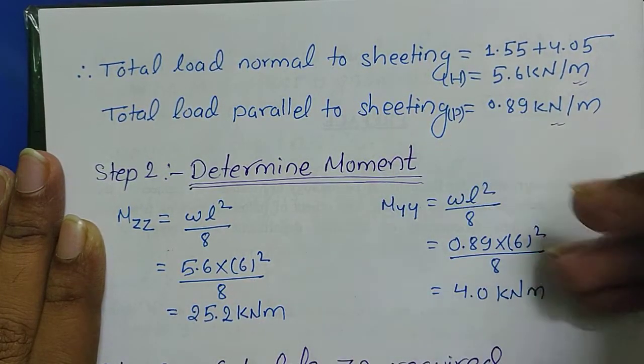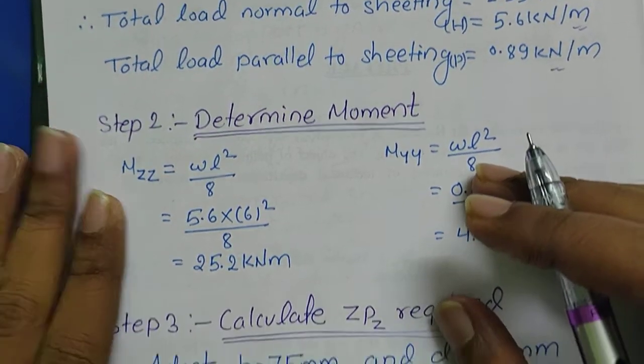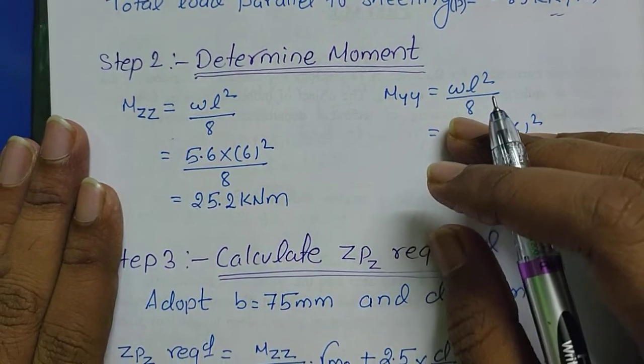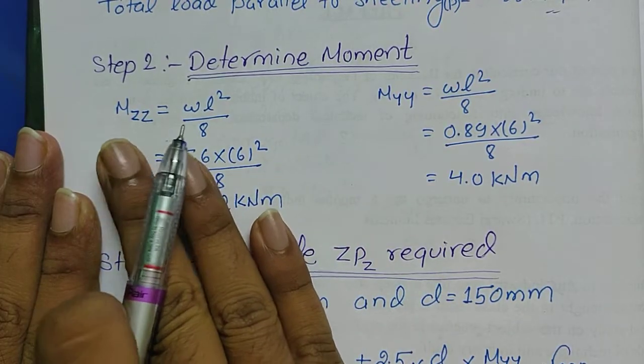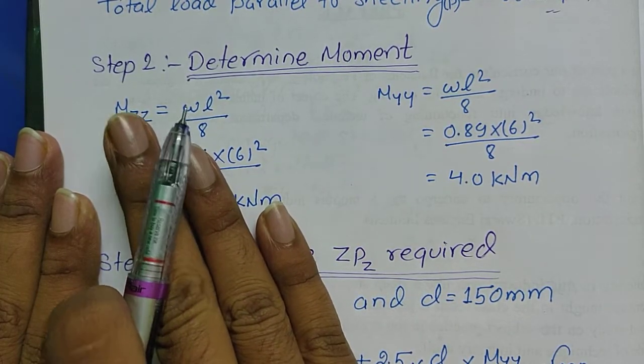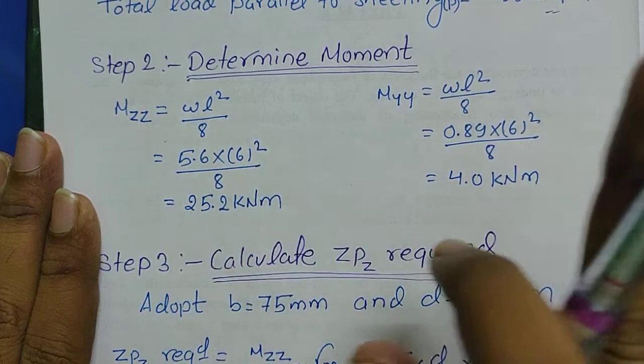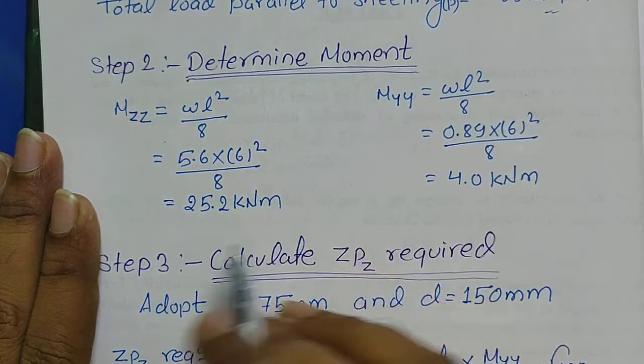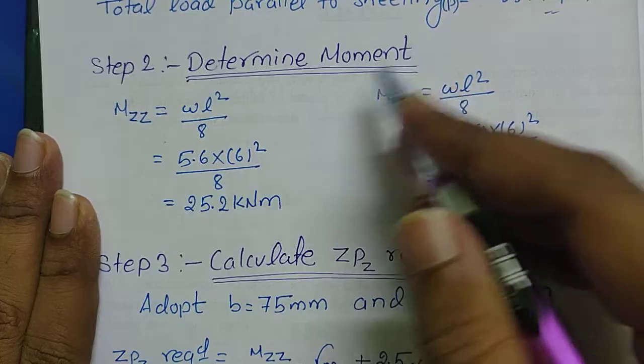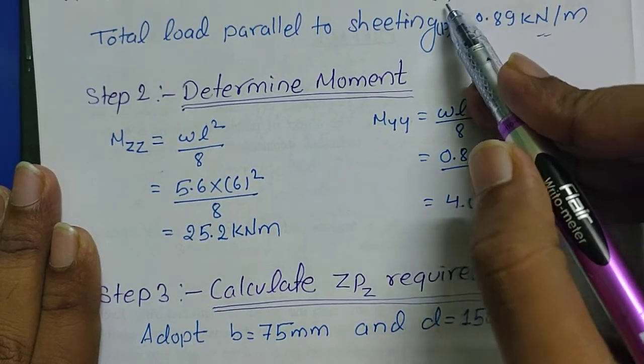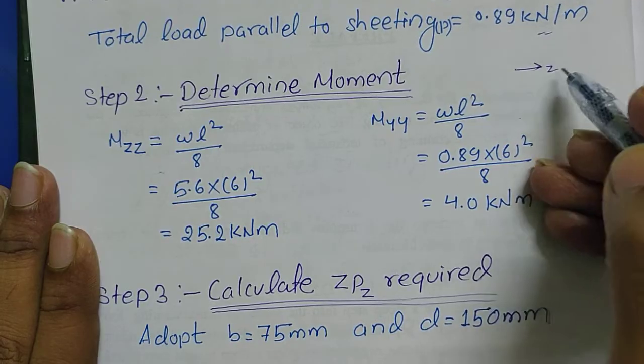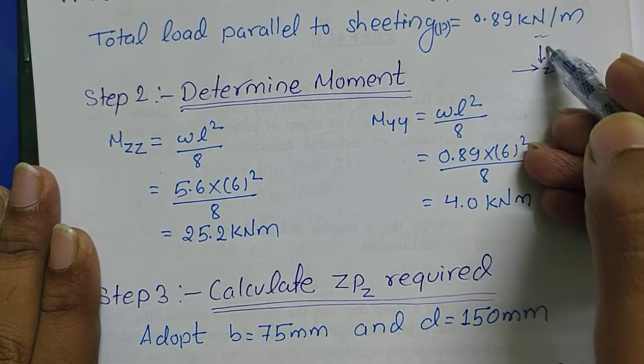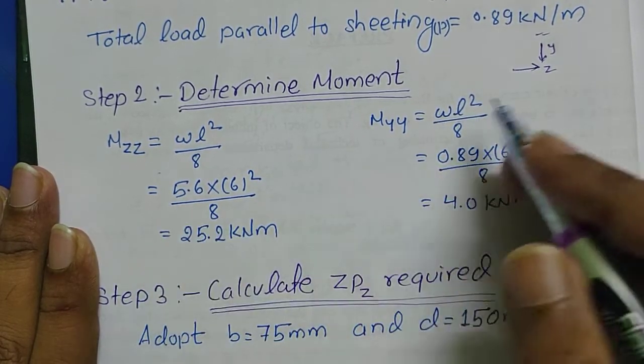Now the second step is to determine the moment. I am going to determine the moment in ZZ direction, which will be WL square by 8 simply, and here WL square by 8. I have calculated the moment in ZZ direction. Normal to the seating is Z and parallel to the seating is Y.